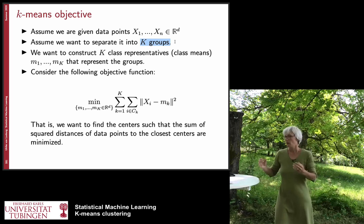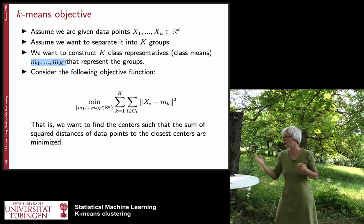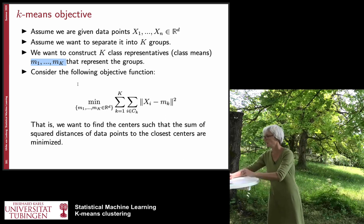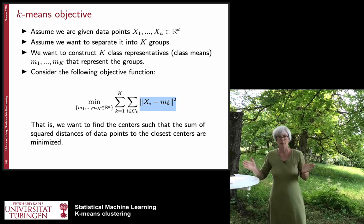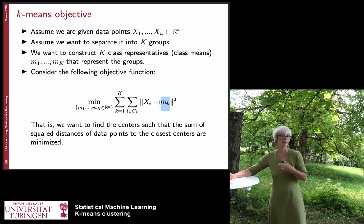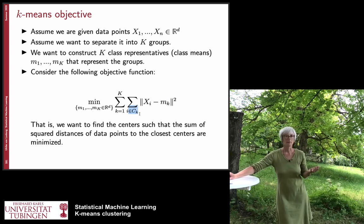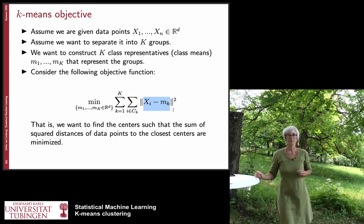The algorithm constructs for each class a representative, which is essentially the center of that class. These are called m_1 to m_k, because they are means. To find these centers, we look at a particular cost function: for each cluster k (indexed from 1 to capital K), we look at its mean, and for all points i belonging to cluster C_k, we measure the squared distance between the point and the cluster mean. We sum over all these squared distances, and this is the cost function.